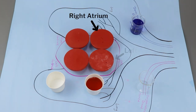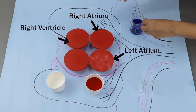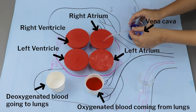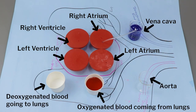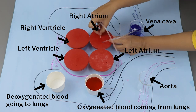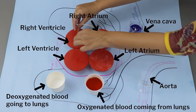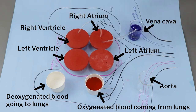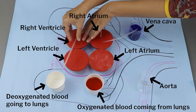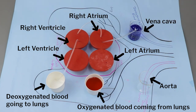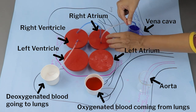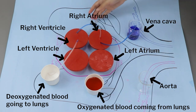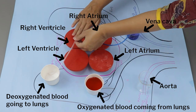Connect the transparent tube from the container having blue water to the right auricle by inserting the tubes into the holes on the balloons. Connect the right atrium to the right ventricle with a transparent tube with a controller. Make the connection from the right ventricle to the empty container kept at the lungs. Pressing the balloon represents the pumping of deoxygenated blood from the vena cava to the right auricle, right ventricle, and lungs.